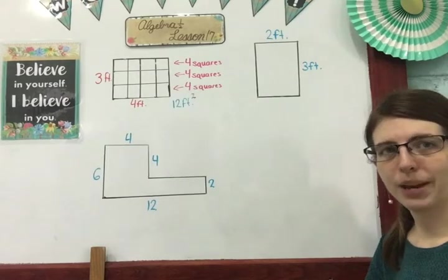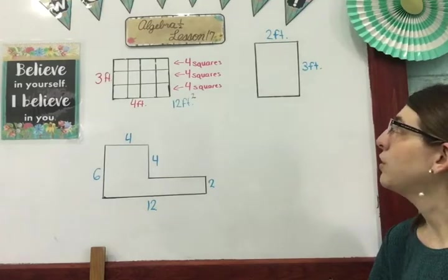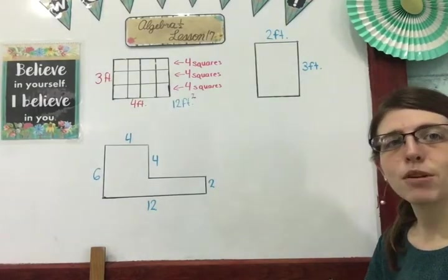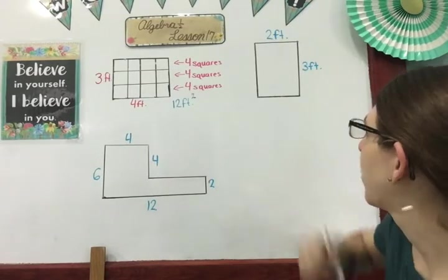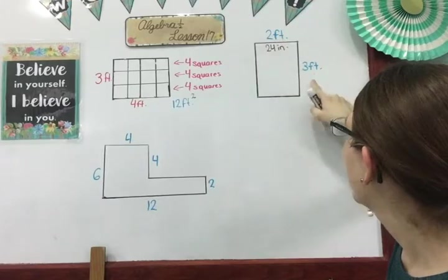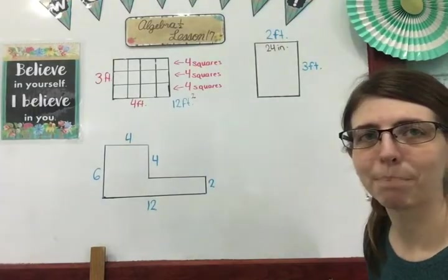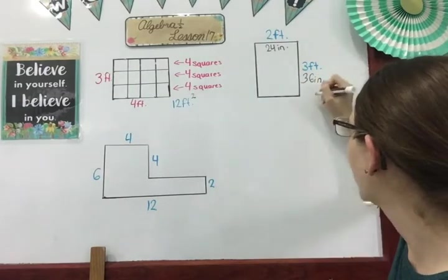How many inches are in a foot? 12. So I have to convert my two feet to inches by multiplying it by 12. So how many inches would it be? 24. Very good. So I have 24 inches. And how many would this one be? 36 inches. Very good. Now I can solve my problem.